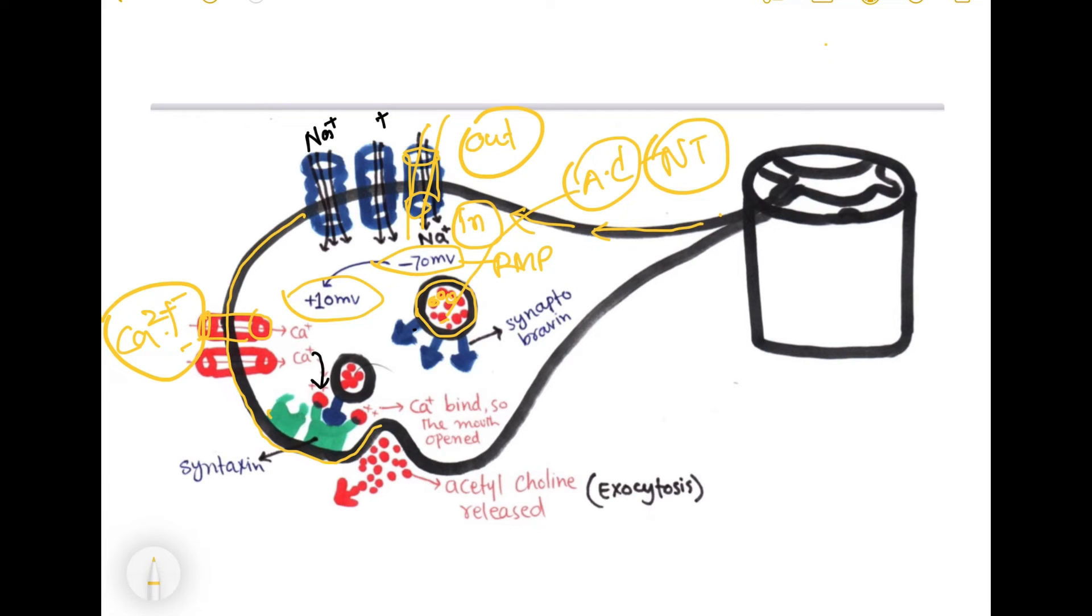There are calcium-sensitive proteins present on the surface of the vesicle and the membrane of the terminal end. On the vesicle surface is synaptobrevin, and on the terminal membrane is syntaxin. Normally, syntaxin is closed.